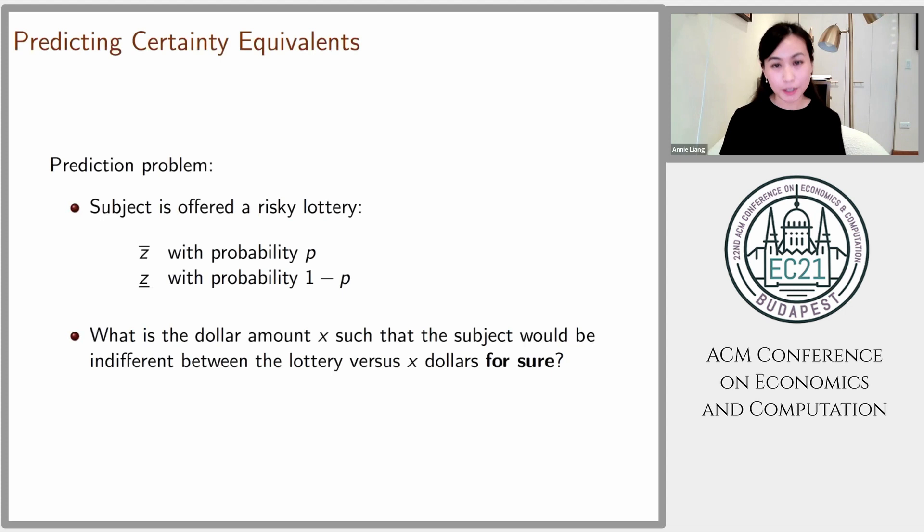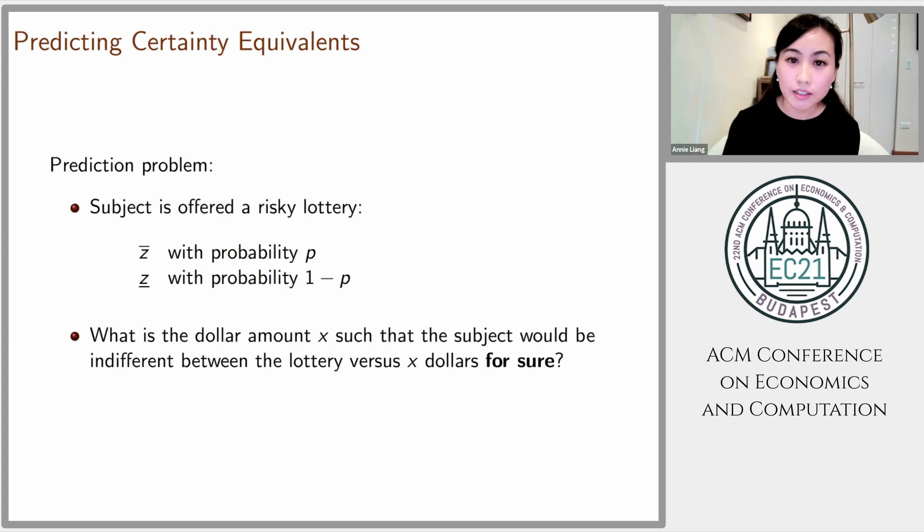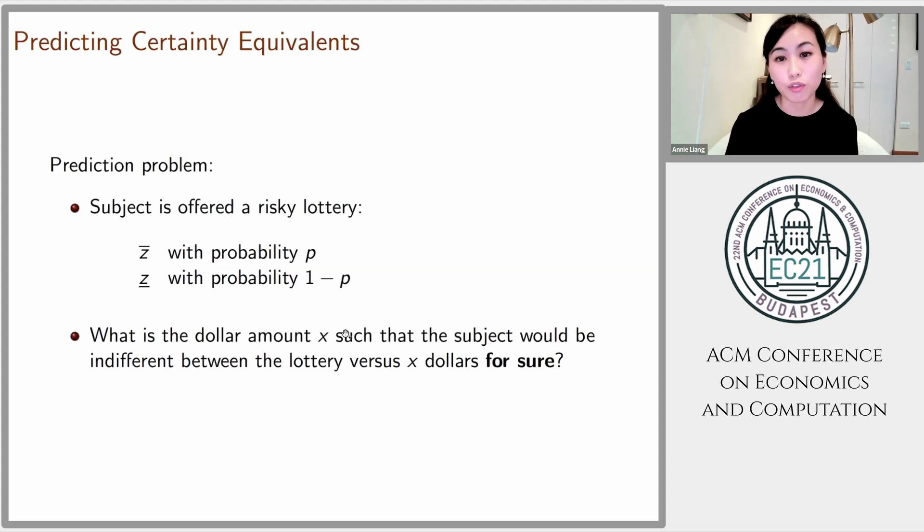Here's the classic problem from economics. Consider a subject who's been offered a risky lottery. There are two possible prizes with corresponding probabilities. We ask the subject: what is the dollar amount X such that you're indifferent between receiving the outcome of this risky lottery versus X dollars for sure? That dollar amount X is known as the certainty equivalent of the lottery.